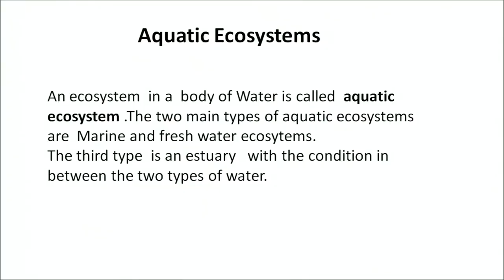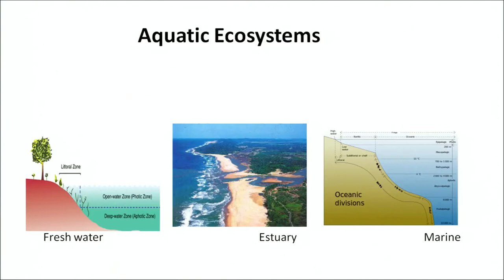What is an ecosystem? As we have already studied, an ecosystem can be divided into two types: aquatic and terrestrial. The aquatic ecosystems are in the body of water. The two main types of aquatic ecosystems are marine and freshwater ecosystems. The third type, that is an estuary, is a condition which is in between the two types of water bodies. These are the three different types: freshwater, estuarine and marine.